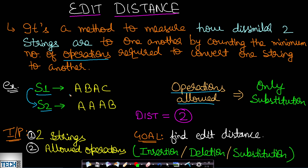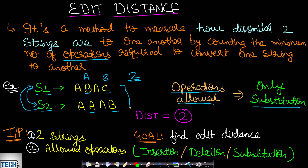We will be given certain allowed operations. Let's say S1 is ABAC and S2 is AAAB, and the only allowed operation is substitution. We can replace B with A, and replace C with B. After two substitutions, S1 becomes AAAB, which matches S2. You could also convert S2 to S1 — it takes the same number of operations either way. So the edit distance here is two, because we needed two substitution operations to convert S1 to S2.